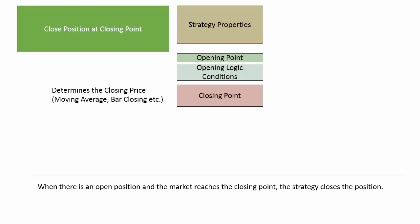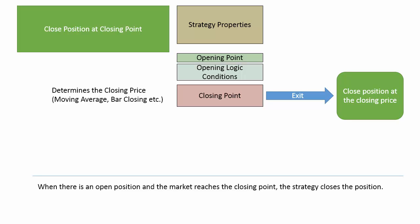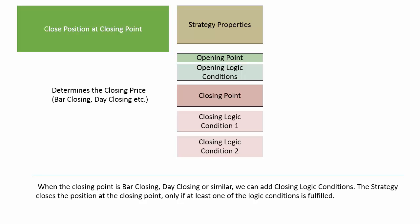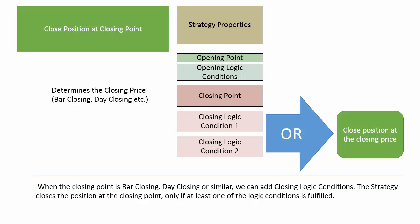Every strategy also needs a closing point. Here we place an indicator that will define the price at which the strategy will close the position. If we add an indicator that specifies only price, such as bar closing or other, we can add additional closing logic conditions. As you already know, the opening logic conditions must all be met for the strategy to open a position. The difference here is that the strategy needs only one of the closing logic conditions to be satisfied to close a position.